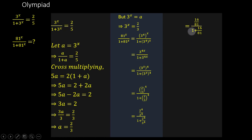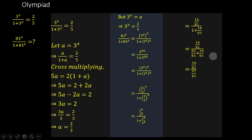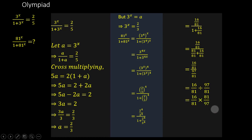We can rewrite 1 as 81 over 81 so that we have a common denominator, allowing us to add the numerators. So we now have 16 over 81, all over 81 plus 16 over 81. Adding the numerators gives 81 plus 16, so we have 16 over 81, all over 97 over 81. This is the same as 16 over 81 divided by 97 over 81. Applying the rule of dividing fractions, we change division to multiplication and take the reciprocal: 16 over 81 times 81 over 97. The 81s cancel, giving us 16 over 97.